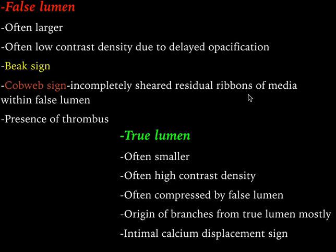This is a summary: the false lumen is usually larger, has low contrast density, shows the beak sign, cobweb sign, and presence of thrombus. All these features together give us the clue for identification of the false lumen. It is very important to differentiate the true and false lumen because it helps in management — specifically, which lumen the surgeon needs to enter to place a stent or perform an aortic repair.